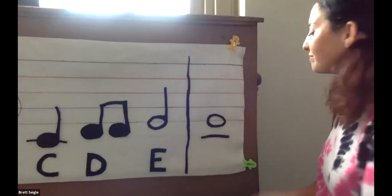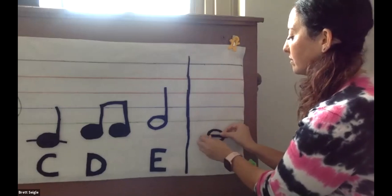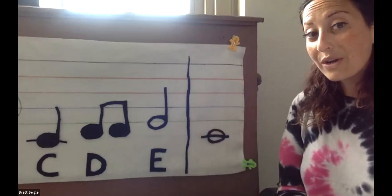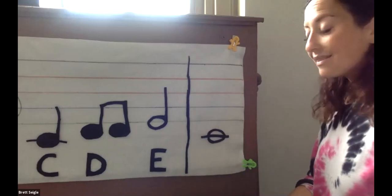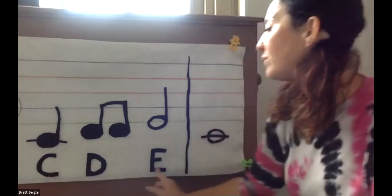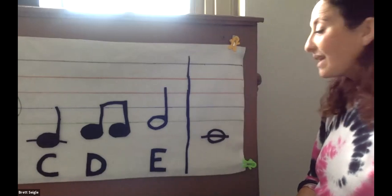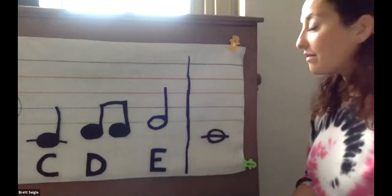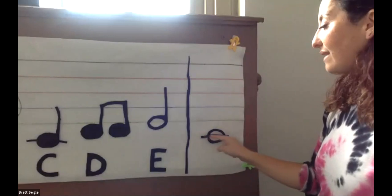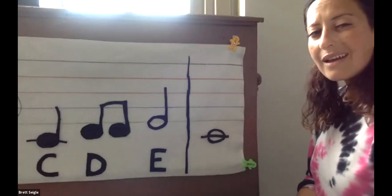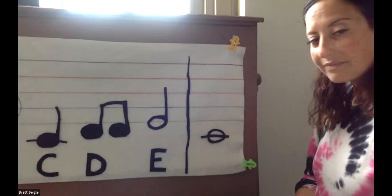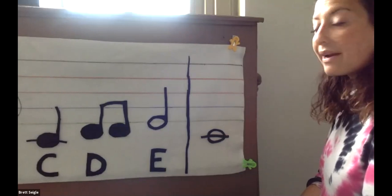Let's do another one. What note do you think this is? Is it C, D, or E? If you guessed C, you are correct. It's got its own special line going through the middle. I will do three more and then I will move on to our games.